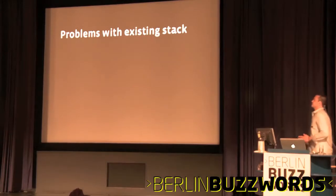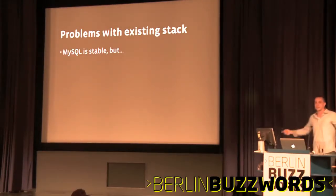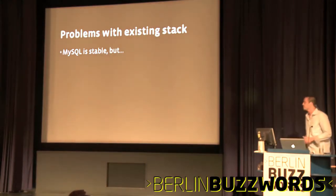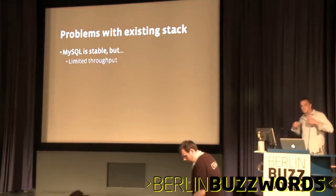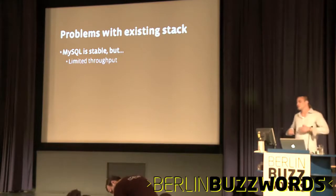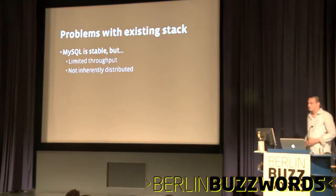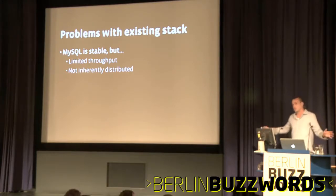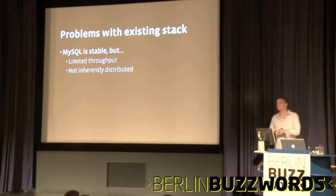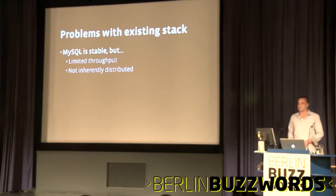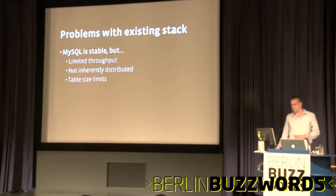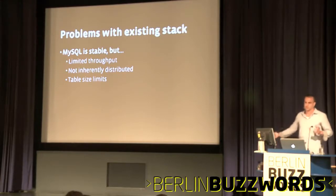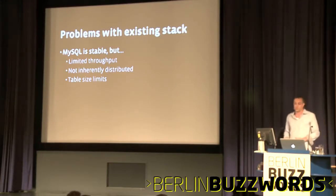So what's wrong with the stack? It's the LAMP stack, everyone scales it, it's working for us right now at Facebook, so why do we need to change anything? Well, MySQL gives you limited throughput, especially when you're talking about writes. It's not inherently distributed — we've built a big distribution layer on top of it, but inherently MySQL is a single node piece of software. MySQL also suffers from table size limits: the bigger your table gets, the slower your writes and reads are.